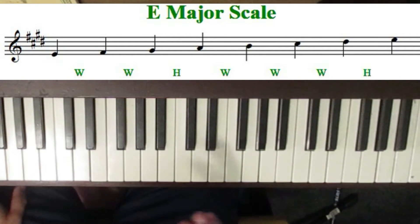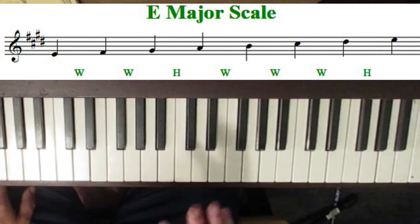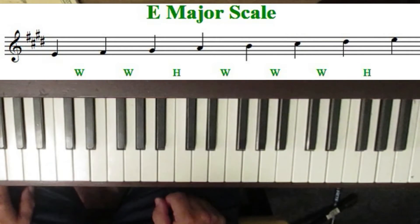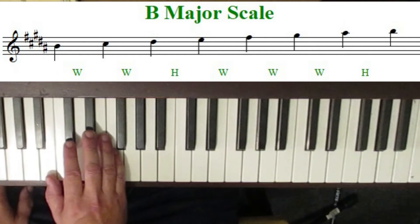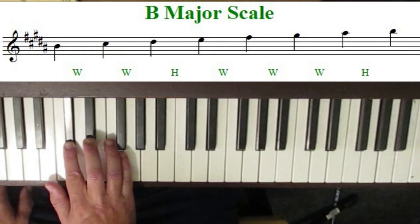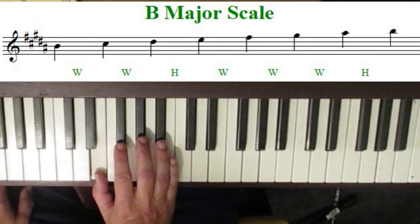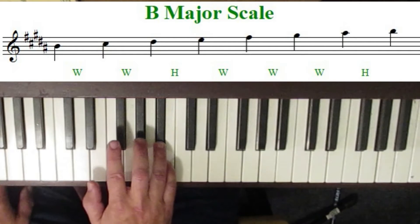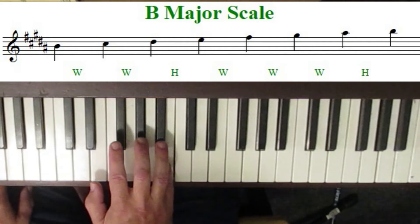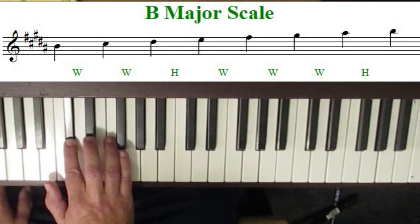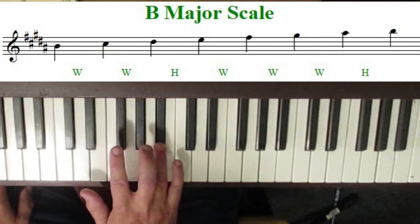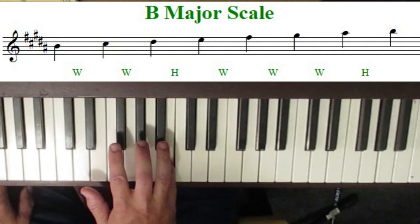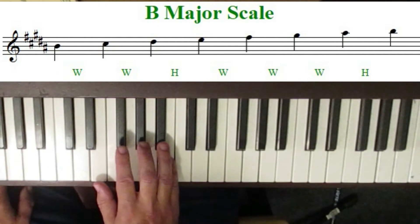You've probably started to realize why I'm jumping around — each scale I'm showing you I'm adding one more sharp to it. So let's take a look at the scale of B major. Starting just like E, you have to go a whole step up to the sharp: B, whole step to C sharp, whole step to D sharp, half-step to E, whole step to F sharp, whole step to G sharp, whole step to A sharp, and a half-step back to B. The key of B major has five sharps in it, as reflected in the key signature.